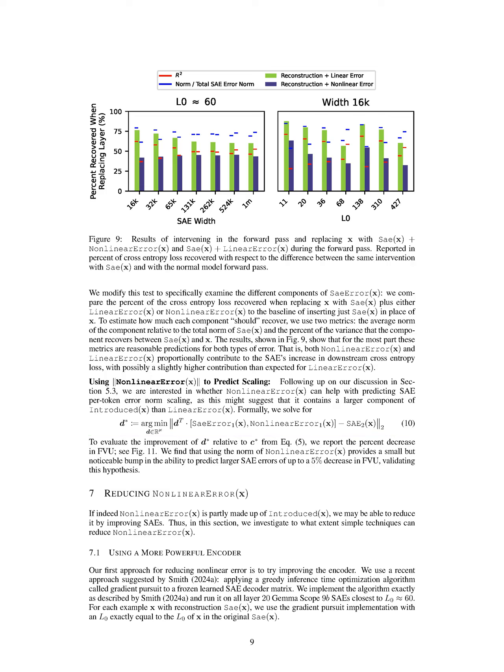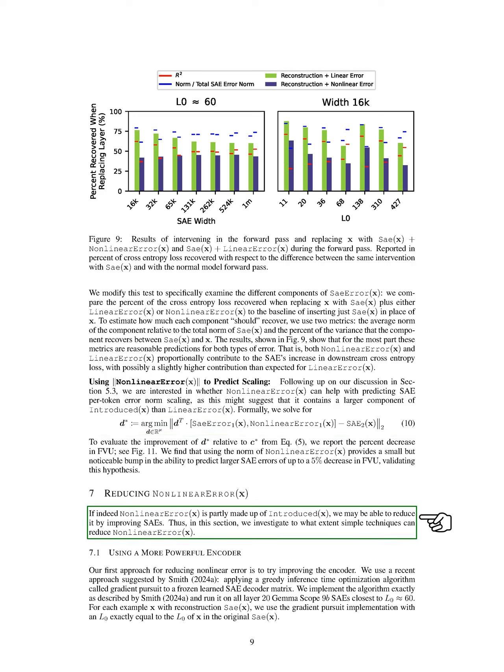Section Summary. In this section, we analyze the predictability of per-token SAE errors across different sizes and demonstrate that the linear and non-linear components of SAE error can be effectively separated and modeled. Our experiments confirm that the non-linear error contributes significantly to predicting larger SAE errors, with a notable improvement in prediction accuracy when incorporating its norm. In the next section, we explore how we can reduce the non-linear error at a given point by enhancing the performance of our stacked autoencoders.